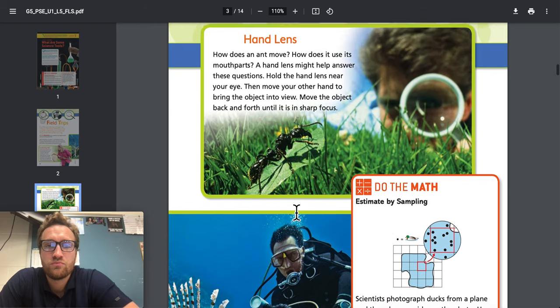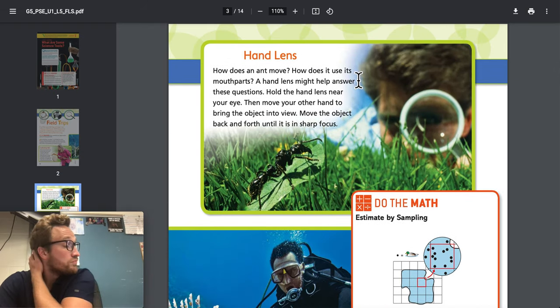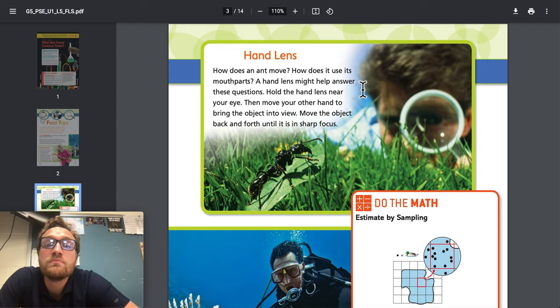Hand lens: How does an ant move? How does it use its mouth parts? A hand lens might help answer these questions. Hold the hand lens near your eye. Then move your other hand to bring the object into view. Move the object back and forth until it is in sharp focus.